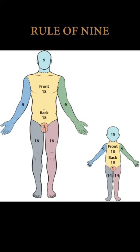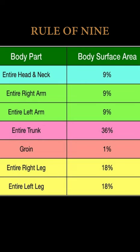The Rule of Nine is a method used to calculate the area of burn in a patient, and it plans the fluid needed to be administered. This method divides the body surface into percentages. The main difference between the adult and the children is the head percentage.